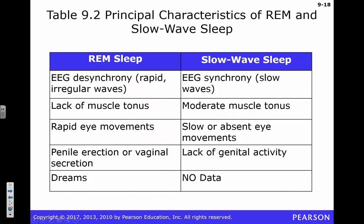Here are some characteristics of REM sleep versus slow wave sleep. We covered most of those. REM sleep and slow wave sleep serve distinct functions, which is why they are separately regulated and rebounded.